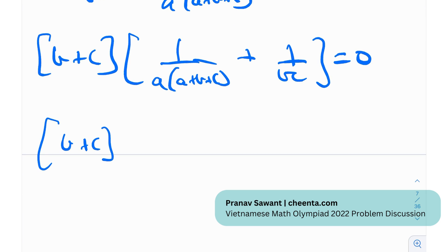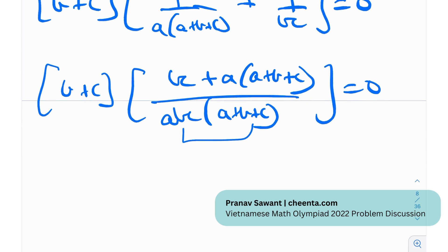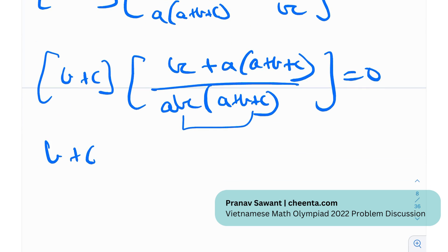So (b+c)/(bc) plus (b+c)/(a(a+b+c)) equals 0, great? So if I just take (b+c) as common, I'll get 1/(a(a+b+c)) plus 1/(bc) equals 0, okay? So (b+c), here I'll get abc(a+b+c) in the denominator and over the numerator I'll get bc plus a(a+b+c) equals 0.